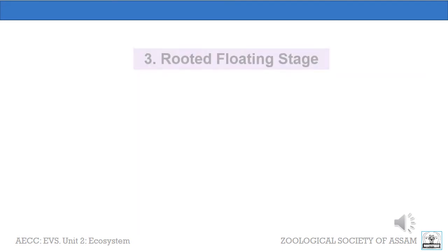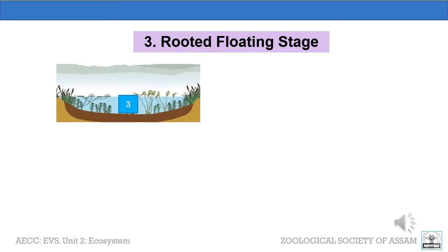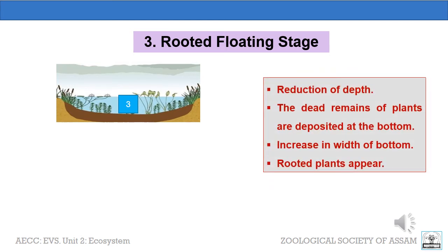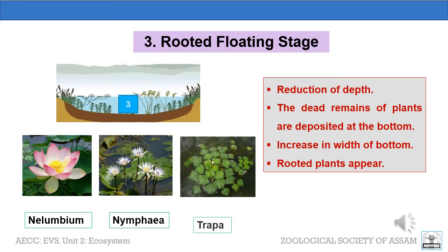The third stage is the rooted floating stage, when rooted floating plant species begin to grow. The habitat becomes changed chemically as well as physically. The dead remains of plants are deposited at the bottom, the substratum rises up in the vertical direction, and this decreases the depth of the pond. The rooted plants appear. The important rooted plants at this stage are nelumbium, nymphaea, trapa, etc.